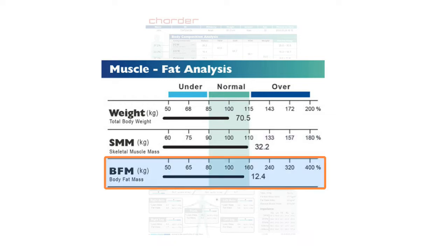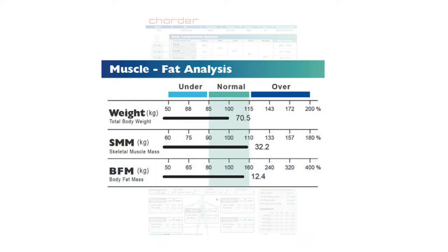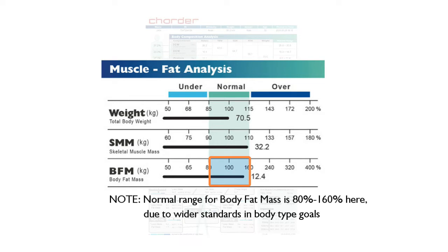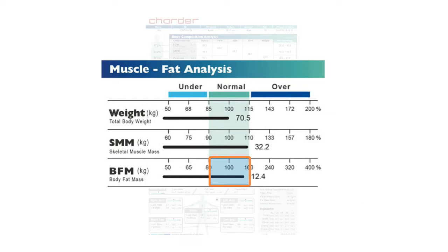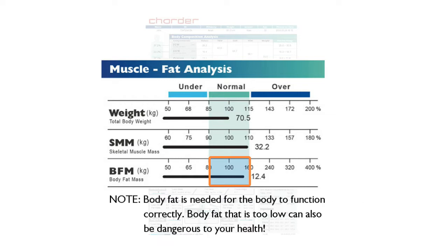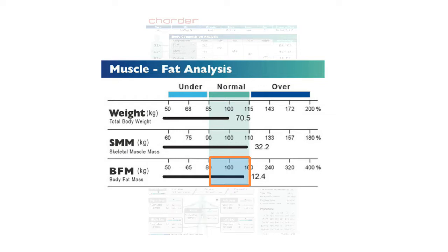The third line is body fat mass. Just like the lines above, this will tell you if the amount of body fat you have is under, normal, or over. Note that the normal range is a bit wider than for weight or muscle. We generally recommend keeping your body fat mass within normal range, as body fat that is both too low or too high can have negative effects on your long-term health.